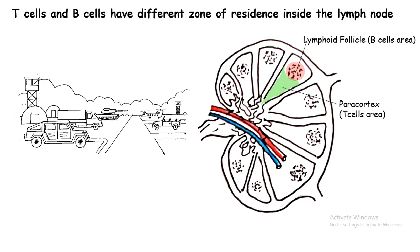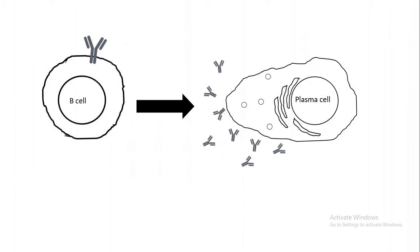There are specific zones for B cells in the lymph node, like the lymphoid follicle where B cells reside. Once a B cell encounters a pathogen, they rapidly proliferate and form the germinal center in the lymph node. Once the B cell is activated, it undergoes affinity maturation and antibody class switching to produce one type of antibody in large amounts, and the B cell gets differentiated into an antibody-secreting plasma cell.